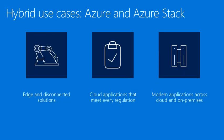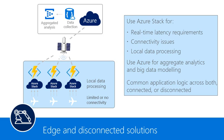What we have is the hybrid scenario, and it looks something like this. We will cover three scenarios today. The first is edge and disconnected solutions: local data processing within Azure using analytics with real-time latency requirements and connectivity issues. By using Azure for aggregate analytics, this helps us apply common application logic across both disconnected and connected scenarios.